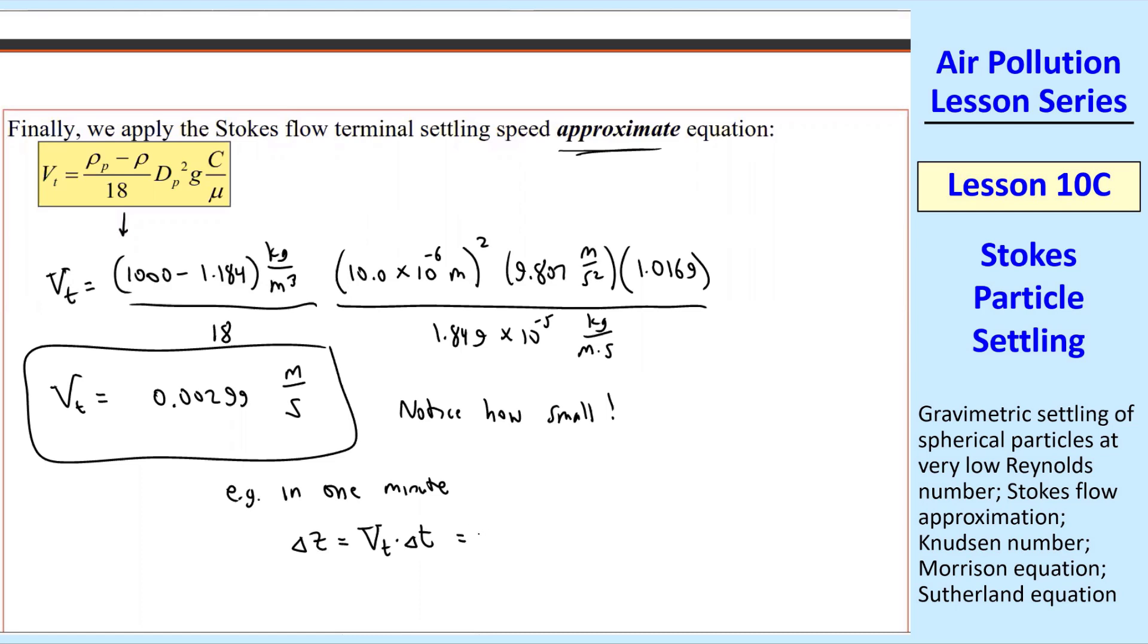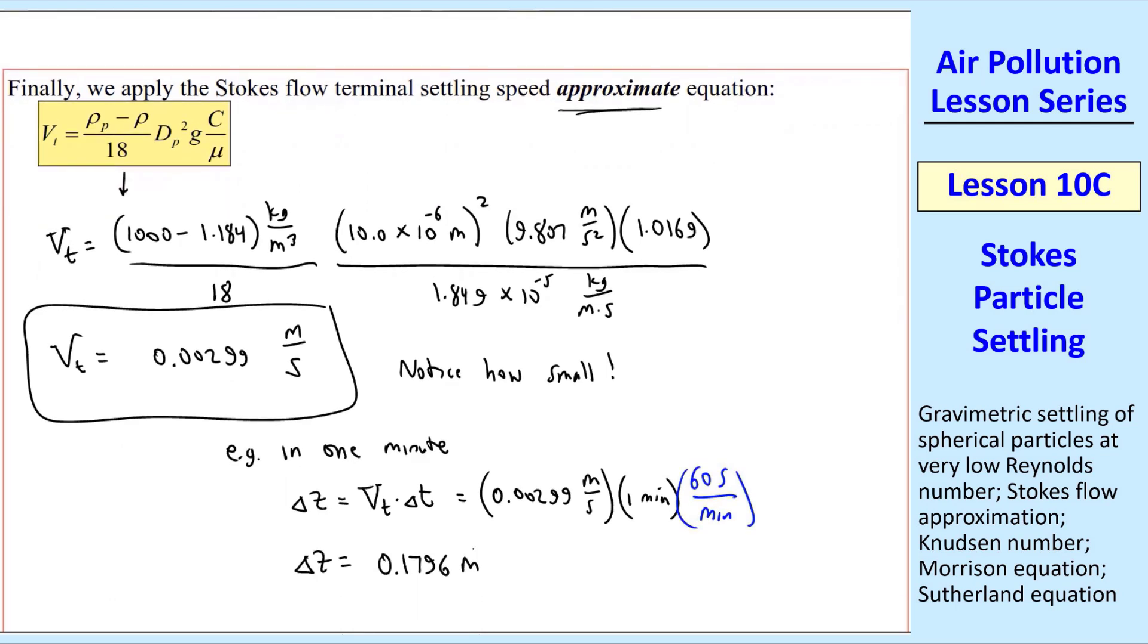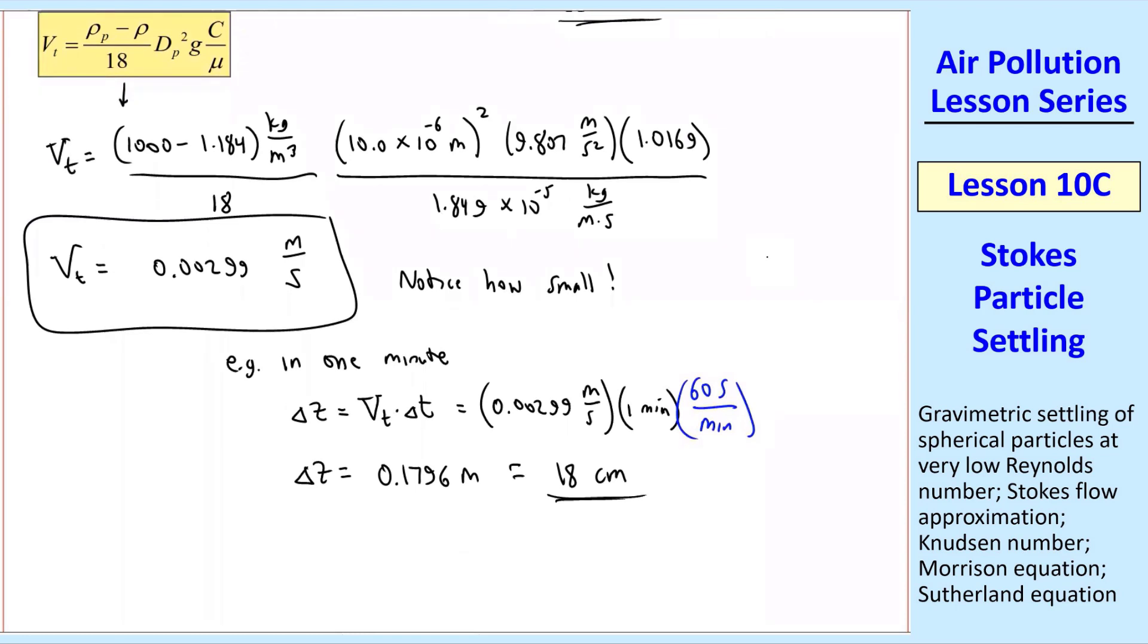With a unity conversion factor, I get 0.1796 meters or about 18 centimeters. So it drops only 18 centimeters in a whole minute. So that's moving very slow for 10 micron particle.